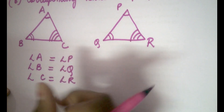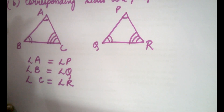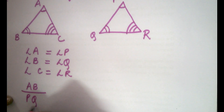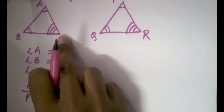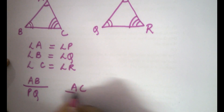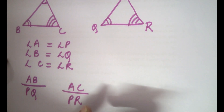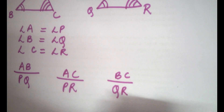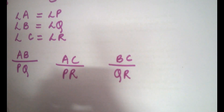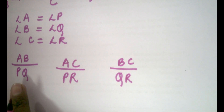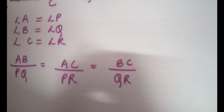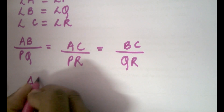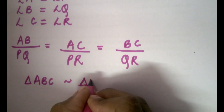The sets of corresponding sides are: AB and PQ, written as AB upon PQ; the second set is AC and PR, written as AC upon PR; and the third set is BC and QR, written as BC upon QR. Corresponding sides are proportional means the ratios between the lengths of corresponding sides are equal. The two triangles are then similar, and we write it symbolically as triangle ABC is similar to triangle PQR.